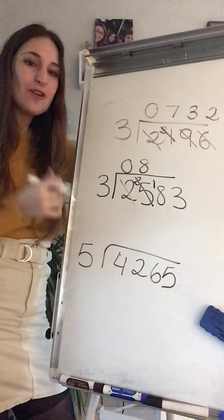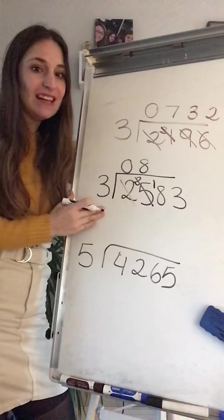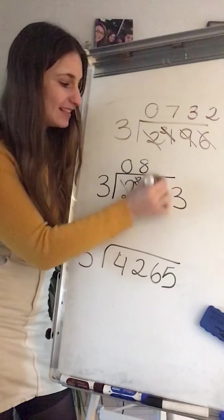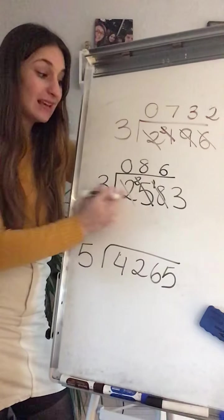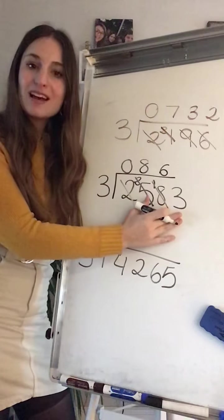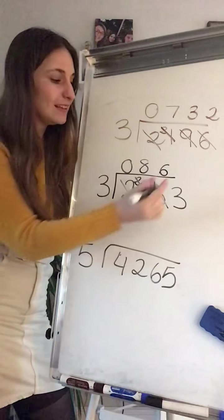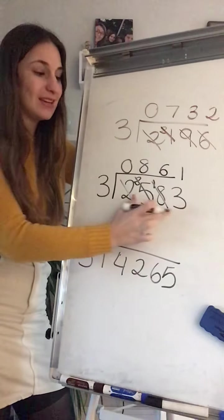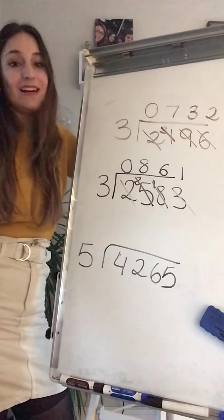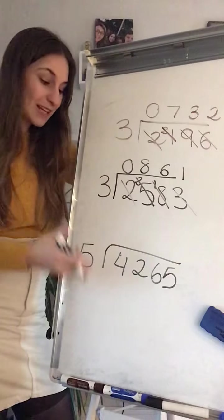Is 18 on my 3 timetable? Well, it is. What times 3 is 18? Well done. 6 times 3 is 18. Then I go to my last one, the 3. It is on my 3 timetable, 1 times 3 is 3. Really easy, isn't it?